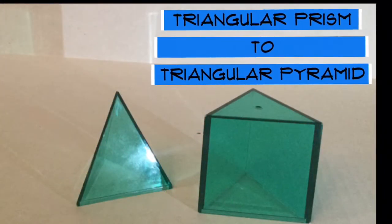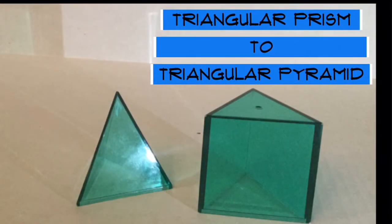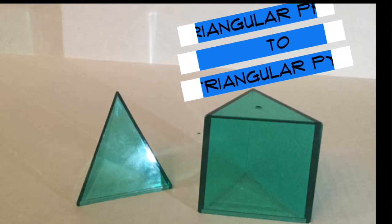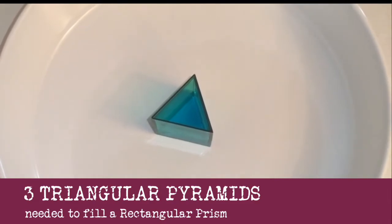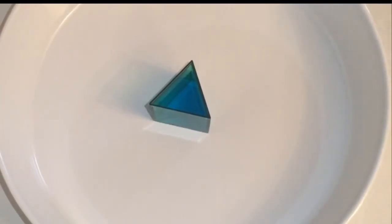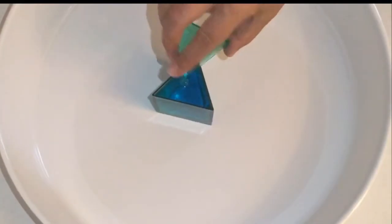Now let's look at the triangular prism and the triangular pyramid. We're going to have the same kind of idea here, where we're going to take the water in the pyramid and pour it into the prism. Remember, they have the same height and their bases are the same, but the capacity is different.